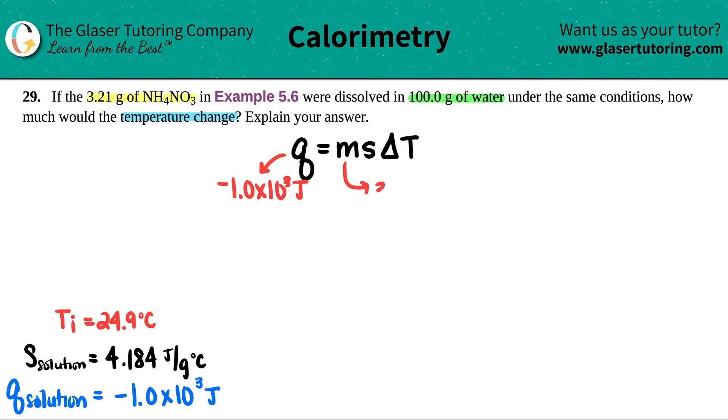In this case, it's the 3.21 grams of the ammonium nitrate plus the 100 grams of the water. So we have a total mass of the solution of 103.21 grams.